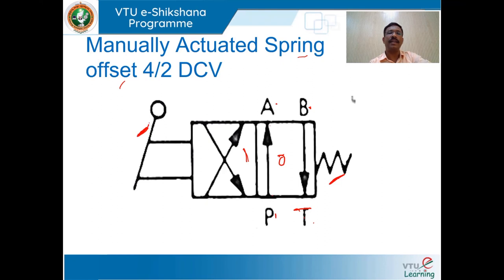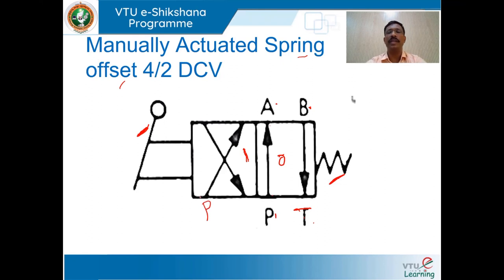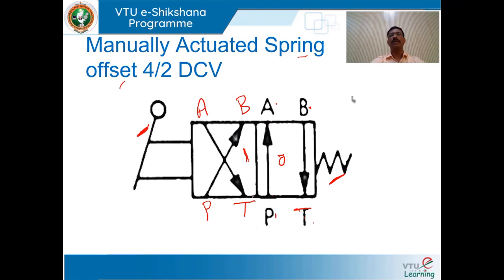When you operate the lever, the valve moves to position 1 and the spool slides within the valve body causing port opening and closing — P connects with B and A connects with T. This is how to draw a symbol for a manually actuated spring-offset four-way two-position directional control valve.